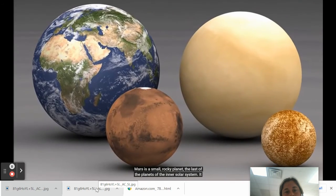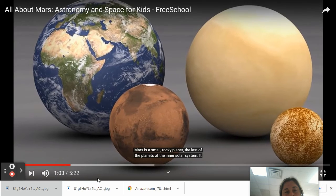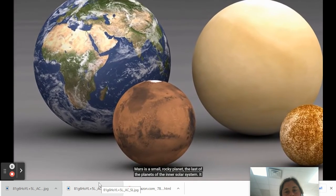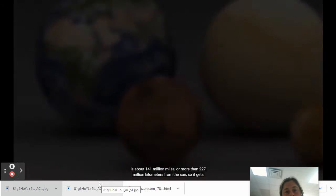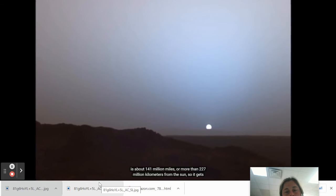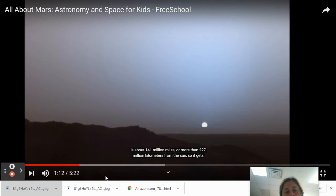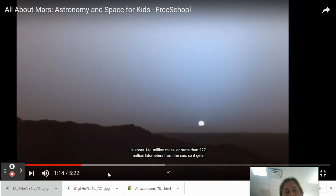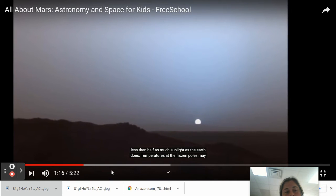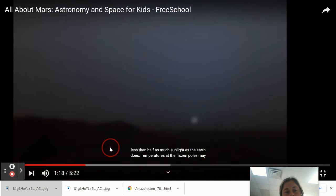Mars is a small, rocky planet, the last of the planets of the inner solar system. It is about 141 million miles or more than 227 million kilometers from the sun, so it gets less than half as much sunlight as the earth does.